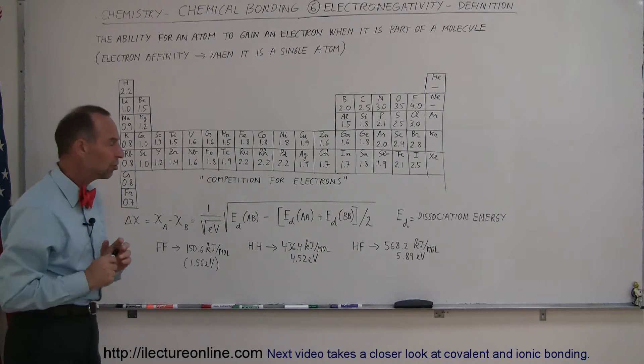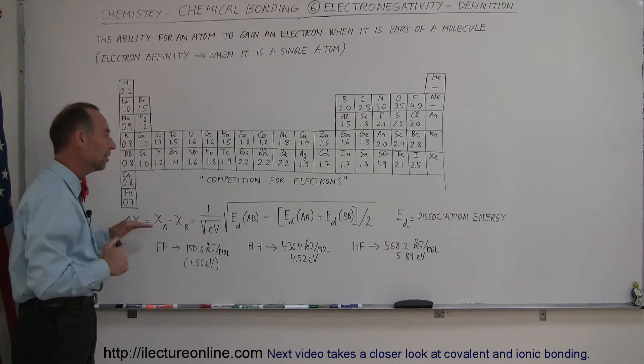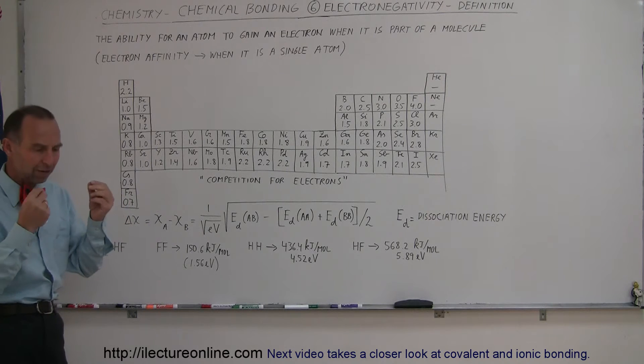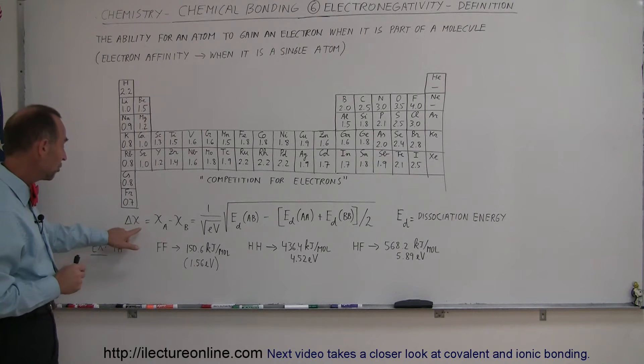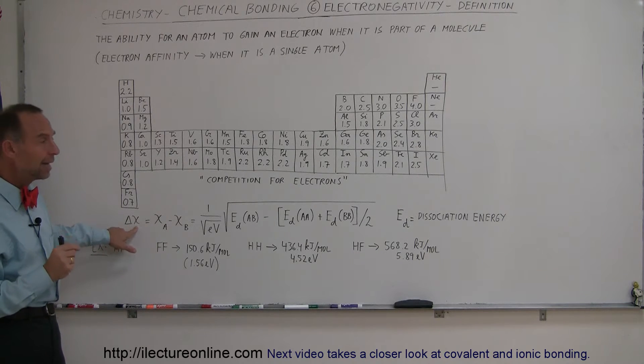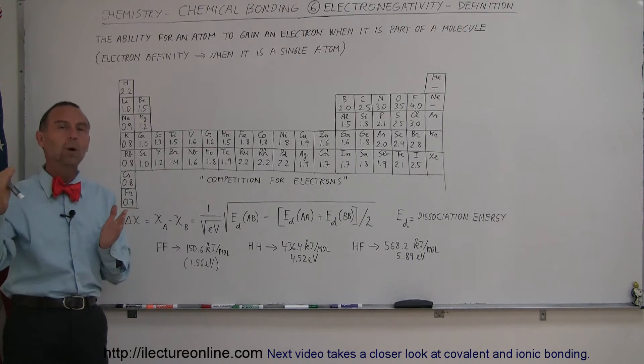So one of the calculations that was done was done by Pauli. He's one of the first ones that came up with the concept of electronegativity and how to actually calculate that. And so they used this symbol for electronegativity, and the way they do that is compare one atom to another.